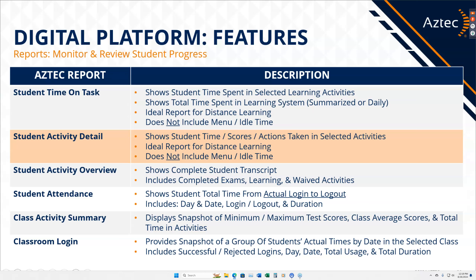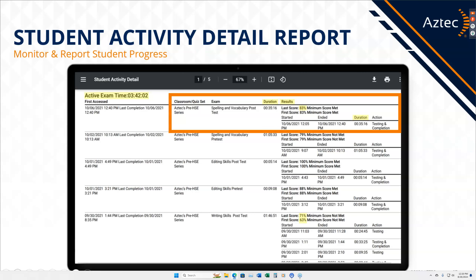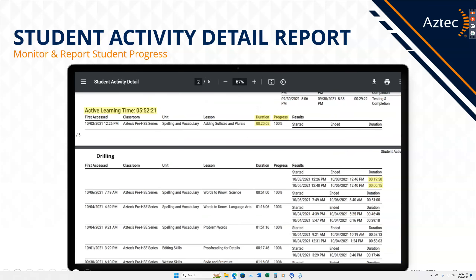Another way to get that information is to look at some of the different reports. Many of us use the attendance report or time on task report to get hours of attendance, but I get all my information from the Student Activity Detail report. This is the exam time for pre and post-tests — I can look at what their score was, scores on multiple attempts, how much time they took, and when they took it. If they took it at 2 o'clock in the morning, that was probably too early and they should go back and review it.